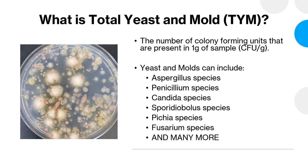So to start, what is total yeast and mold? Total yeast and mold counts are the number of colony forming units of yeast and mold that are present in one gram of sample. These quantitative results are commonly reported as CFU per gram, or colony forming units per gram.